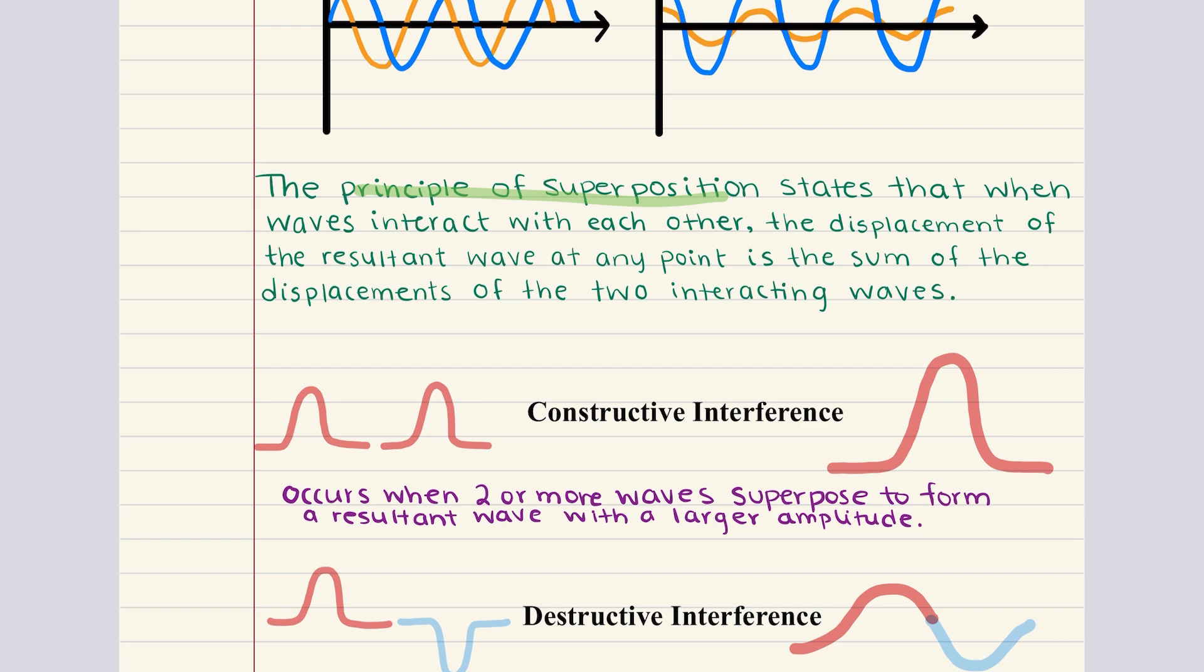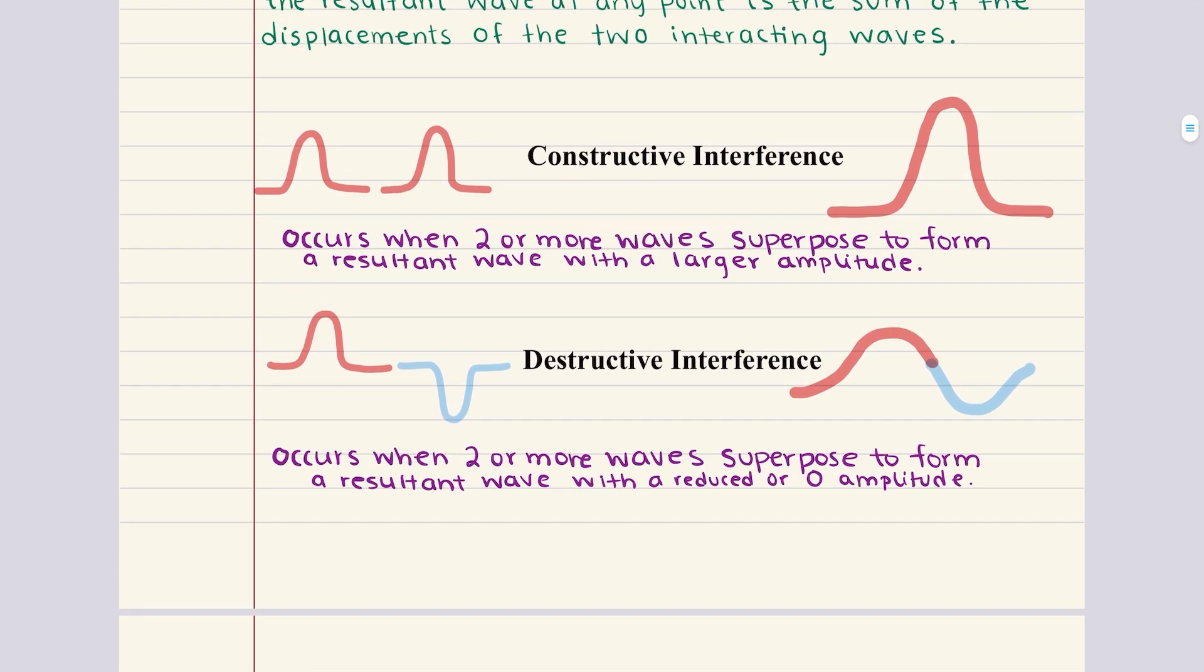According to the principle of superposition, when two or more waves overlap, the displacement of the resultant wave at any point is the sum of the displacements of the interacting waves at that same point. In other words, the waves do not cancel or replace one another. Instead, they add together to produce a new wave pattern. Depending on the waves and how they align, two types of interference can occur. Constructive interference and destructive interference.